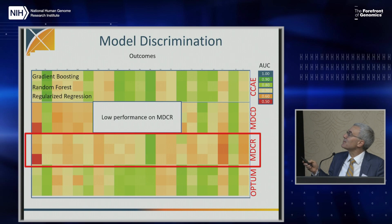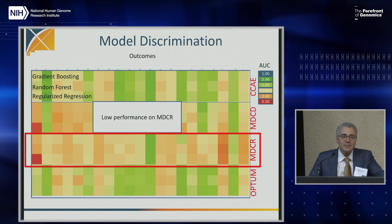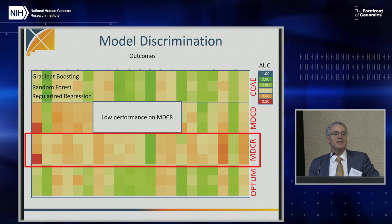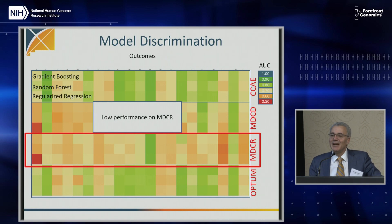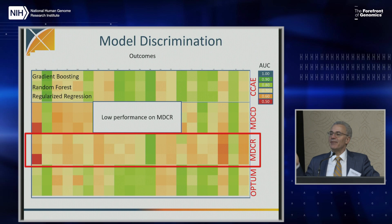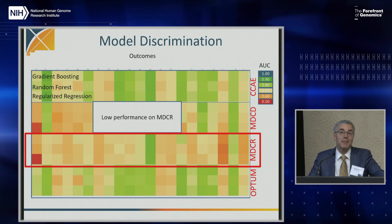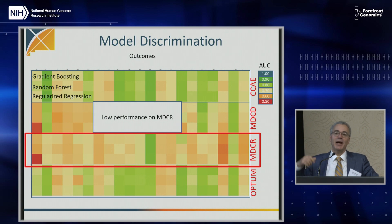Why does Medicare do the worst? It's probably because Medicare is the hardest — if you have a database of young people, it's easy to predict who's not going to get heart failure. If you have a database of sick old people, figuring out which ones will have heart failure is a harder problem. The AUC should really be normalized to the severity of the population. If you try to predict who with heart failure in the past will get heart failure in the future, that's hard.